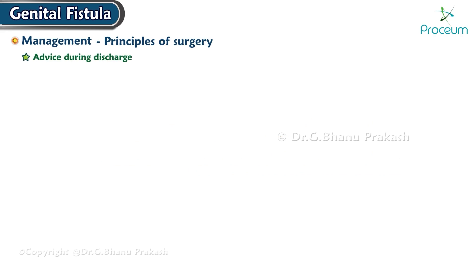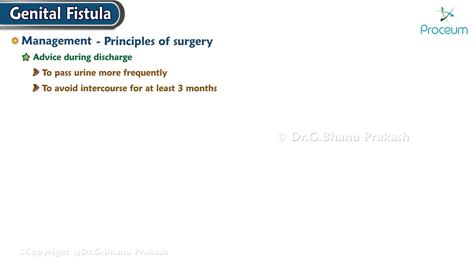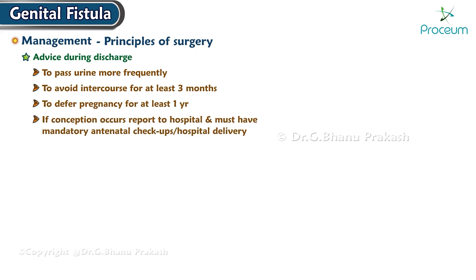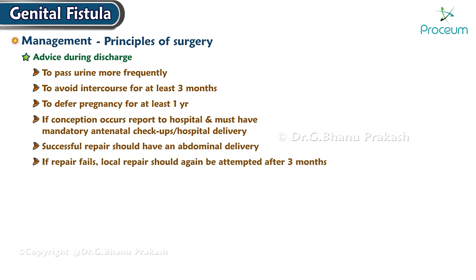Advice on discharge: Pass urine more frequently; avoid intercourse for at least three months; defer pregnancy for at least one year. If conception occurs, report to the hospital with mandatory antenatal checkups and hospital delivery. A successful repair should be followed by abdominal delivery. If repair fails, local repair should again be attempted after three months.